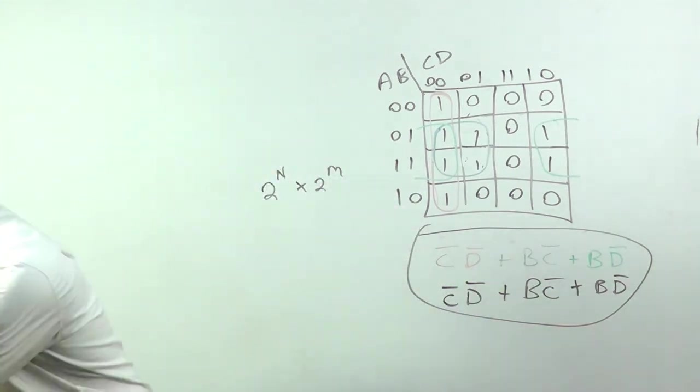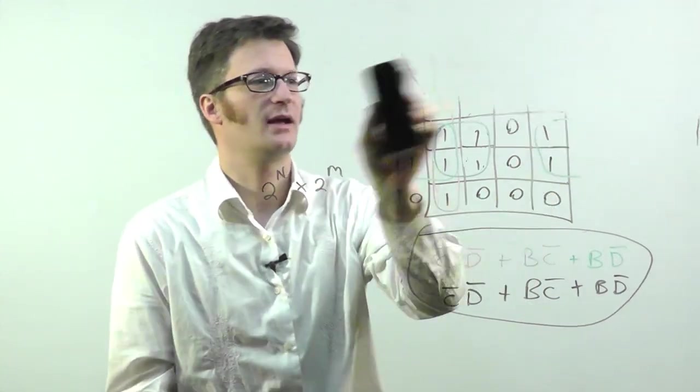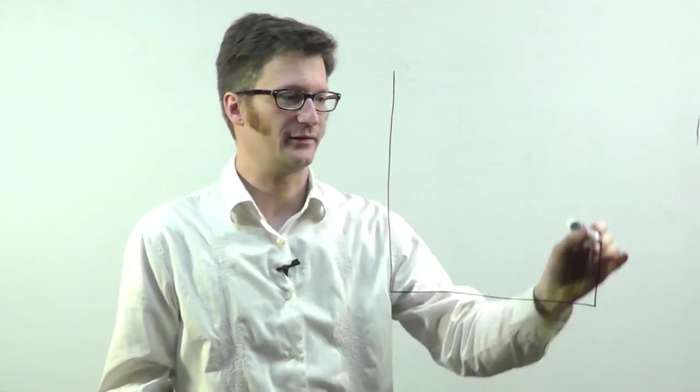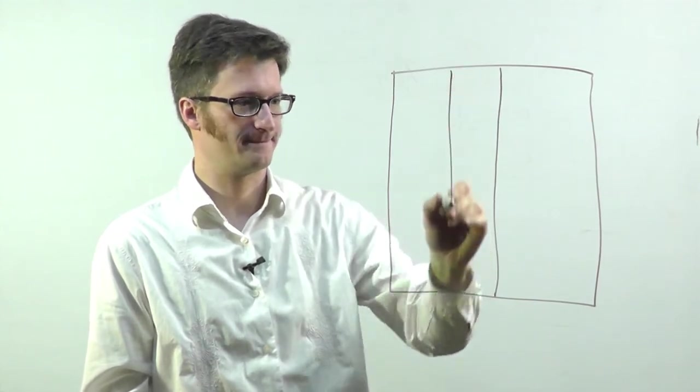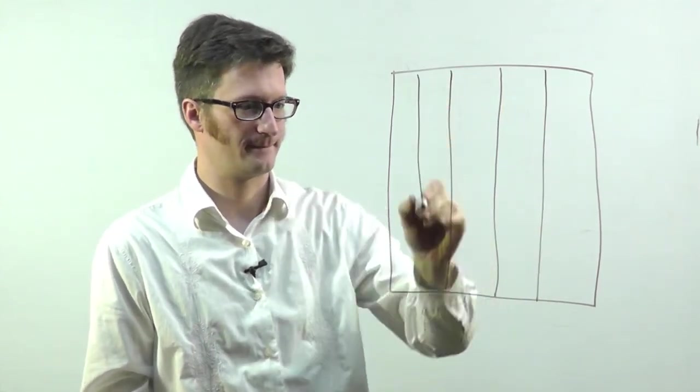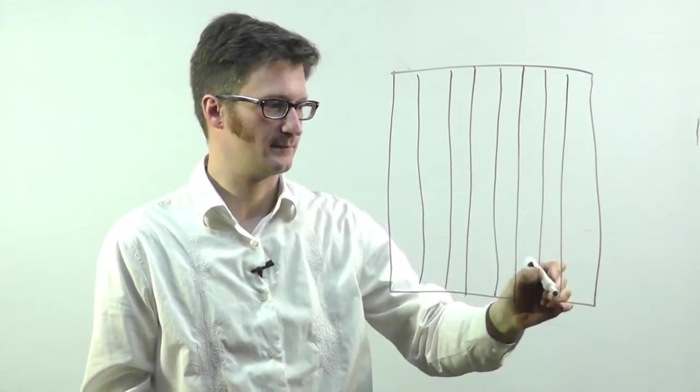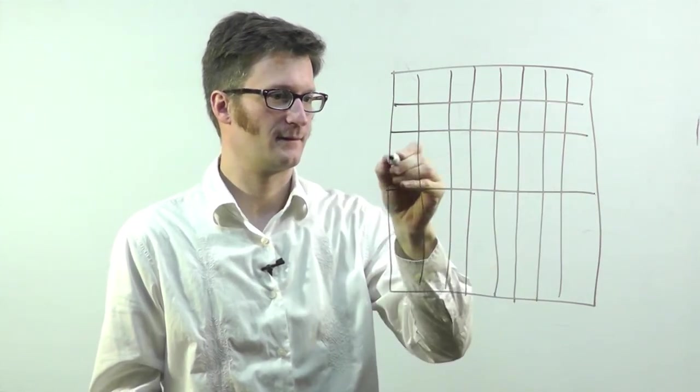Now I'm going to show you a six variable Karnaugh map. And this is where it really starts to get confusing. Six variable Karnaugh maps have eight cells in each direction.